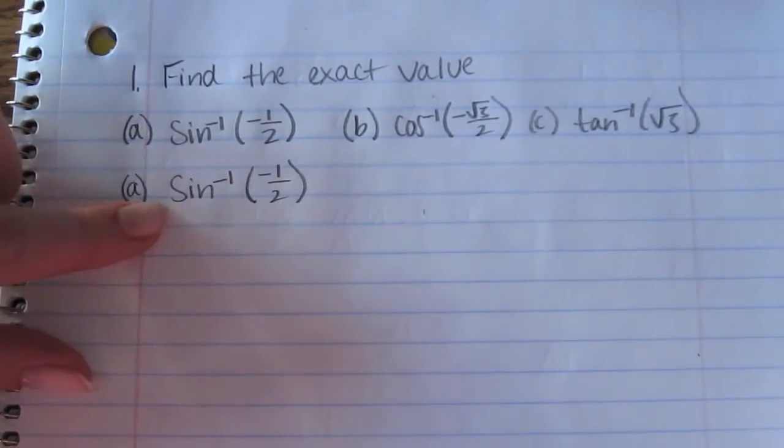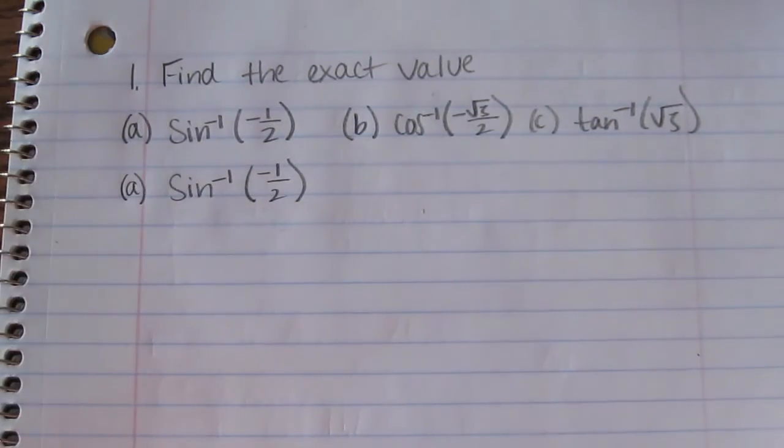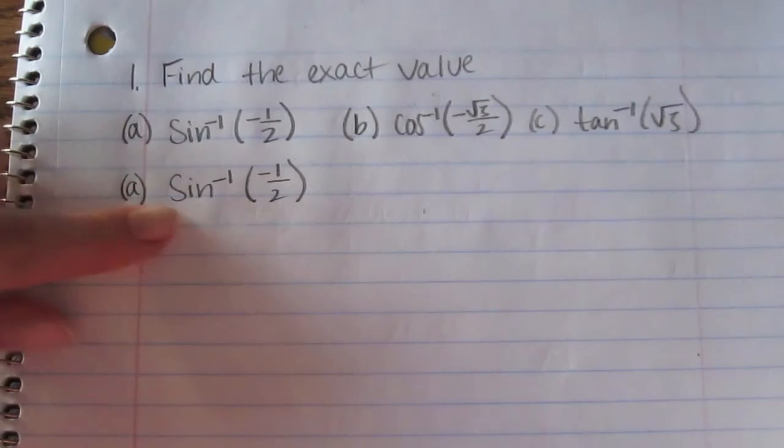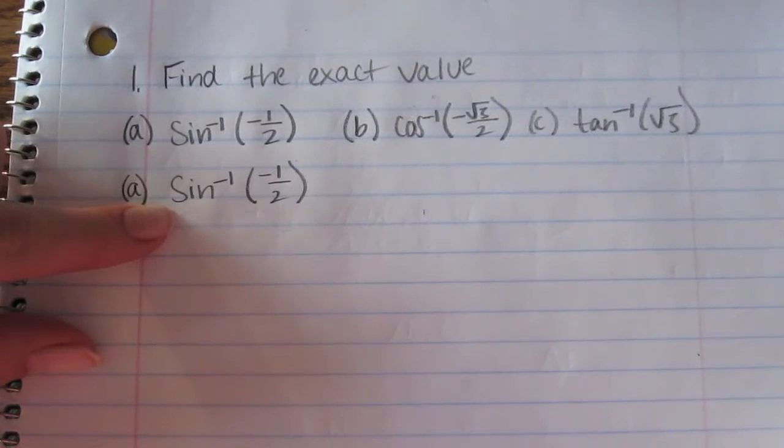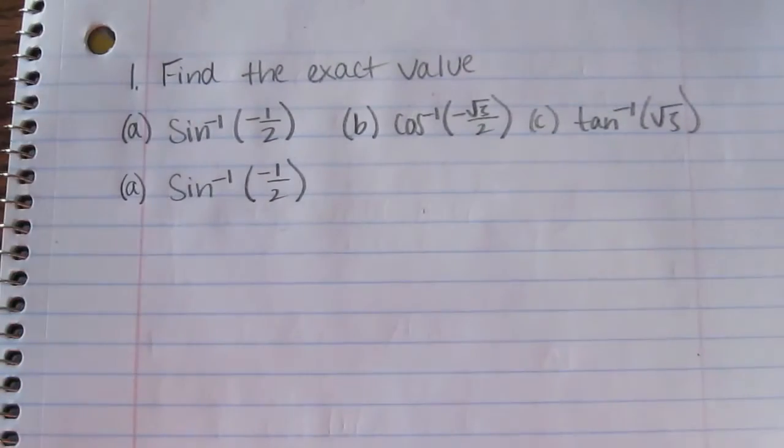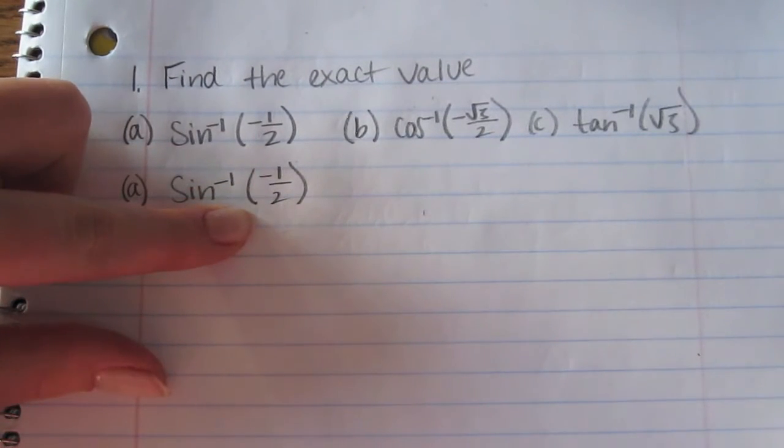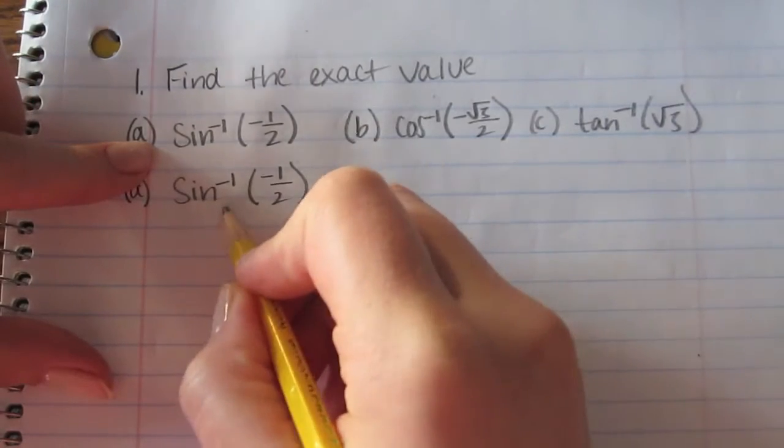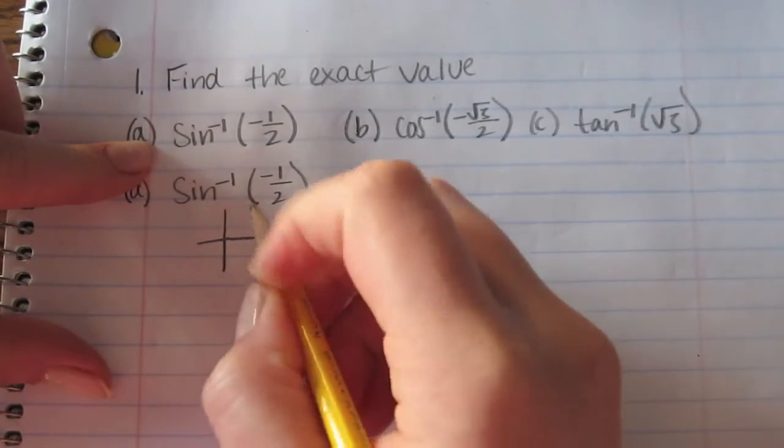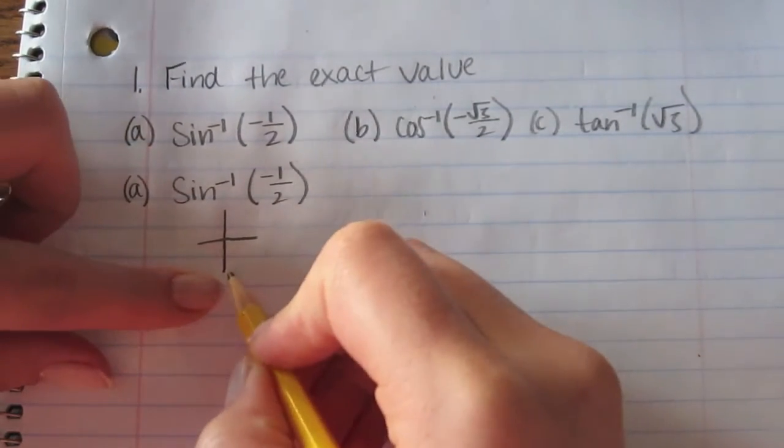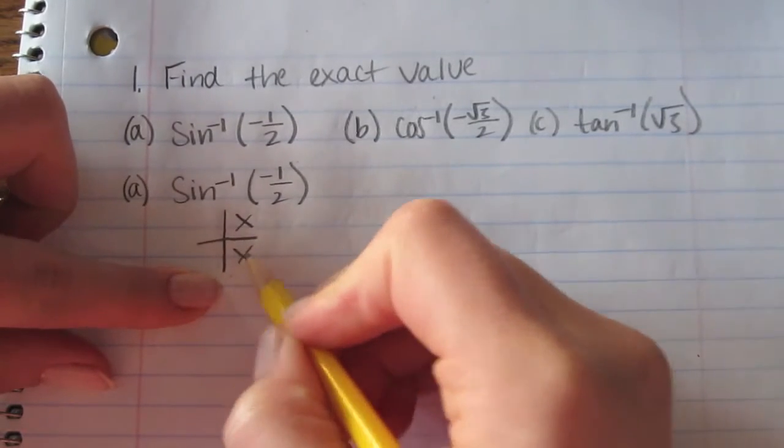We're going to start with the inverse sine of negative 1 half. We know that the domain of this is negative 1 to 1, so negative 1 half is between the two. Now we're going to check the range. We know that is between negative π over 2 and π over 2.